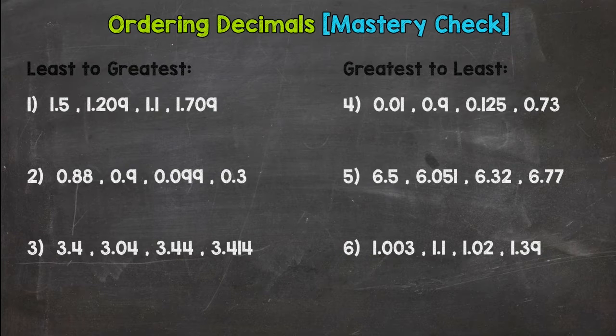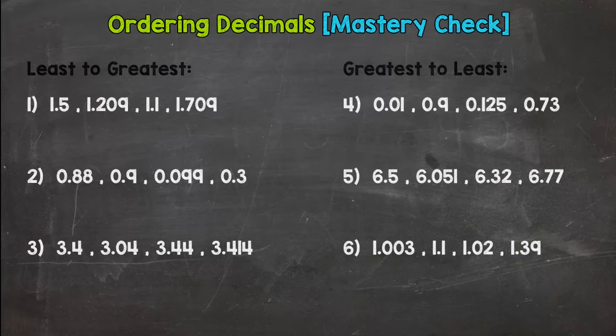So here we are at the ordering decimals mastery check where you basically get to prove if you know your stuff when it comes to ordering decimals. You can probably notice there are six lists of decimals below that you are going to put in order from either least to greatest or greatest to least.